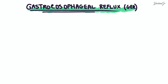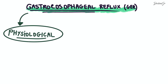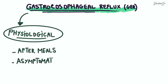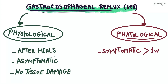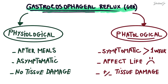It can be divided into two distinct categories. The first one, physiological gastroesophageal reflux, occurs after meals and is generally asymptomatic without causing any tissue damage. In contrast, pathological GER is symptomatic, lasting for at least one week, and can affect the patient's quality of life with or without associated tissue damage.